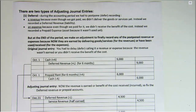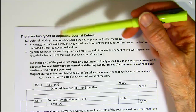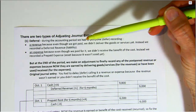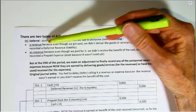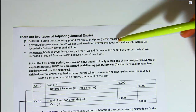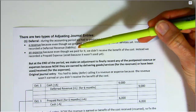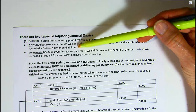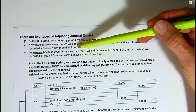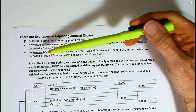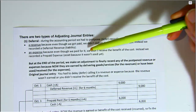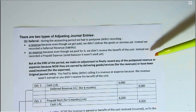So let's look at the handout, the deferral section. During the accounting period, we had to postpone or defer recording a revenue because even though we got paid, we didn't deliver the goods or services yet. Instead, we recorded a deferred revenue — or liability. Sometimes you may hear these referred to as unearned revenue instead of deferred revenue; they mean the same thing and are both liability accounts. Or we had to delay recording an expense because even though we paid for it, we didn't receive the benefit of that cost.